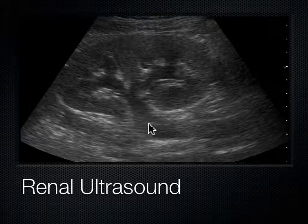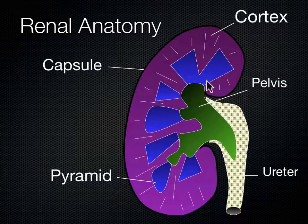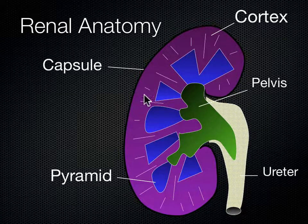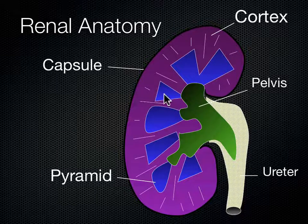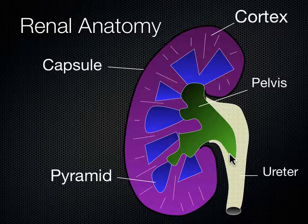Once the ureter exits the kidney, we no longer see it. Here is a schematic diagram of the kidney. You can see the capsule structure, the cortex where all the nephrons are, and they drain into pyramid structures full of urine. These eventually coalesce into the renal pelvis, sometimes called the renal sinus, and then drain down the ureter into the bladder.